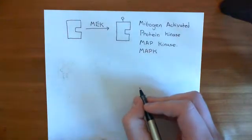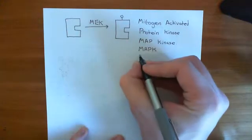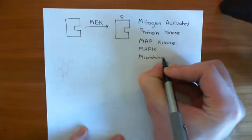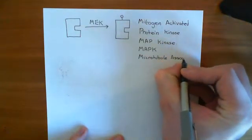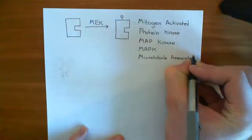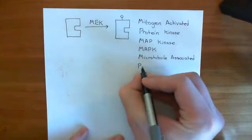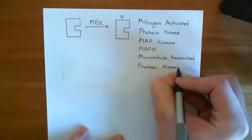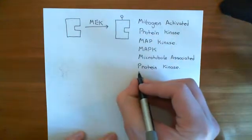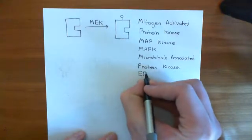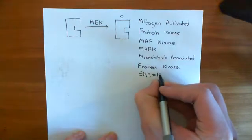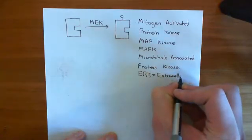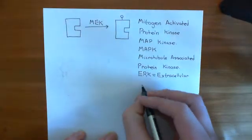There are other names beyond those. It's also referred to as the microtubule-associated protein kinase, which has the same initials as mitogen-activated protein kinase. Finally, another name for it is ERK, which stands for extracellular signal-regulated kinase. That's why people often refer to this pathway as the MAP kinase ERK pathway — two names for the same protein.